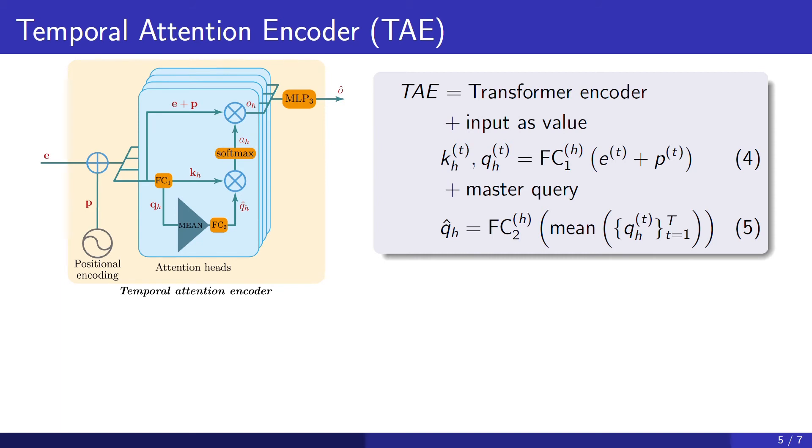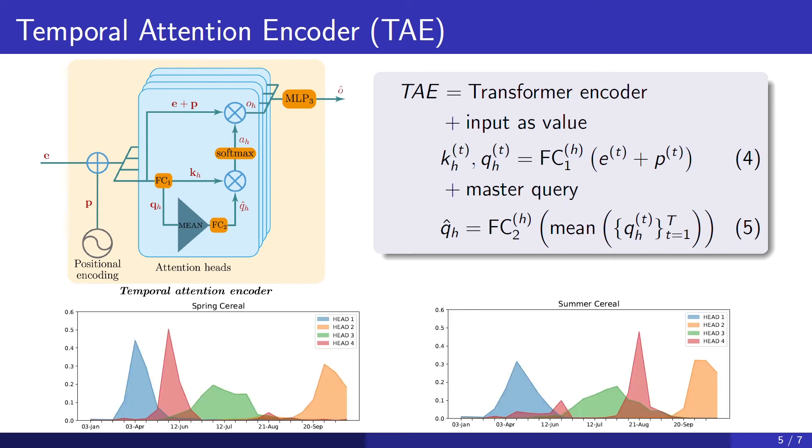As in the transformer architecture, several heads run in parallel to allow for some head specialization, and we show an example of this head specialization on the plots below, where we show the average attention mask of the four attention heads for two classes of our data sets, spring cereal and summer cereal. And looking at the average attention mask of head four, you can see that this head specializes on somewhere in the end of spring for the spring cereal class, and the summer in the end of summer for the summer cereal class.